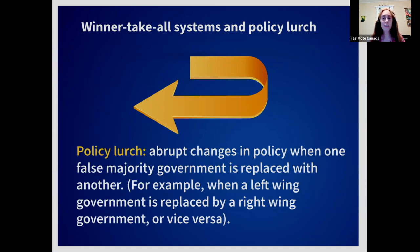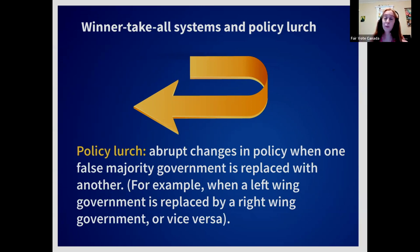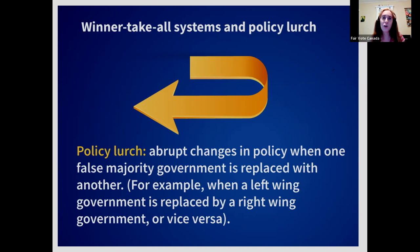Another identified problem with winner-take-all systems is policy lurch. When one party gets 40 percent of the vote and 100 percent of the power, they bring in widely opposed policies. The next party runs on undoing those policies, gets in with their own 40-percent majority, and reverses everything. This wastes time, wastes money, and stops us from tackling long-term challenges that need continuity.